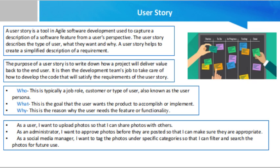The characteristics of a user story — a user story often follows the same format. The three components of a user story are: who, which is typically a job role, customer, or type of user, also known as the user persona; what, which is the goal that the user wants the product to accomplish or implement; and why, which is the reason why the user needs the feature or functionality.